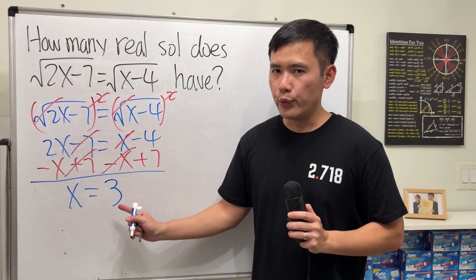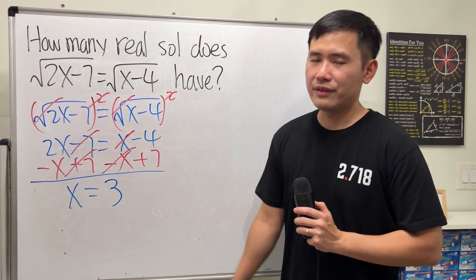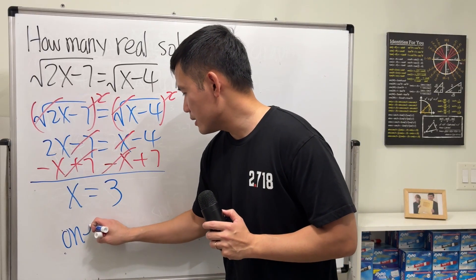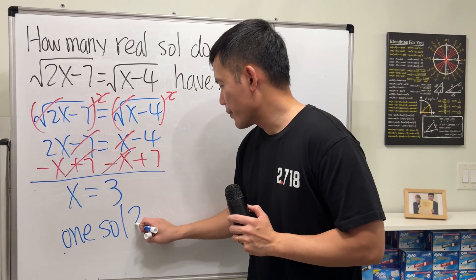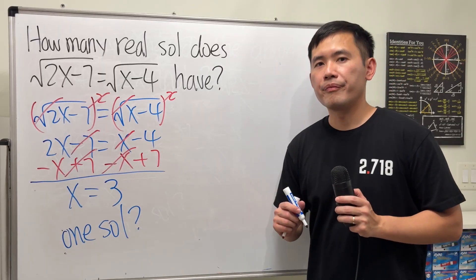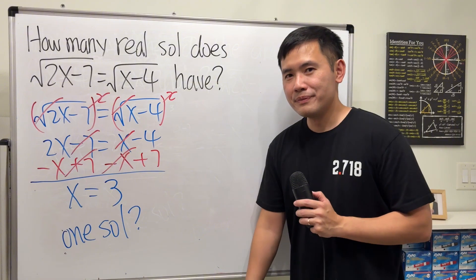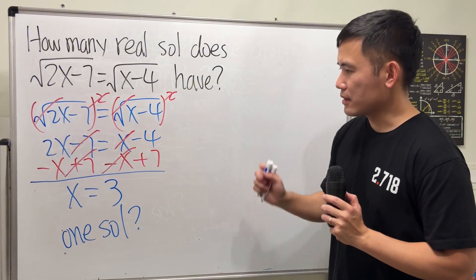Is 3 real? Very real. How many solutions do we have? It seems that we just have one. So the answer is just one solution, right? Yes, 3 is totally real.